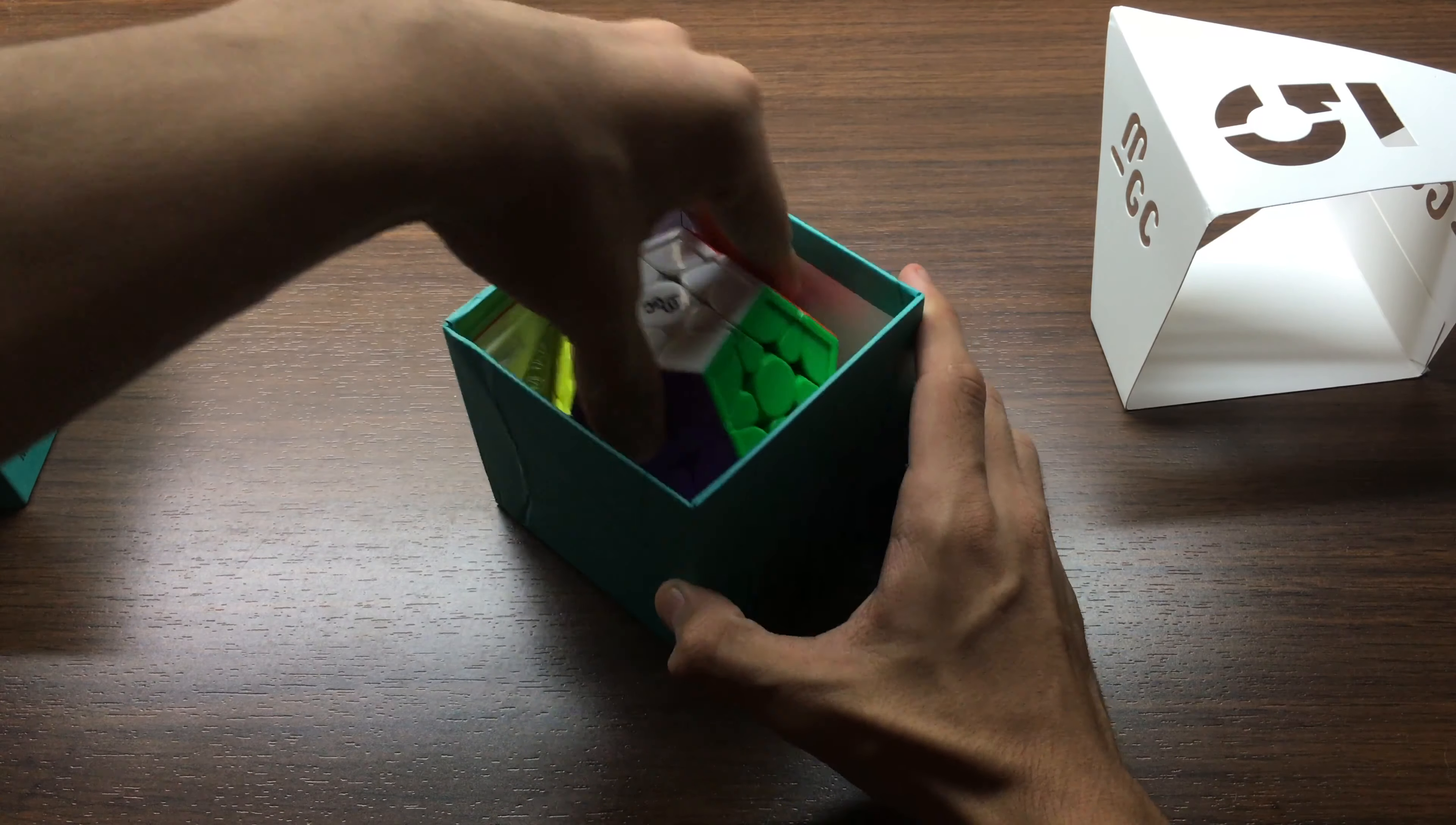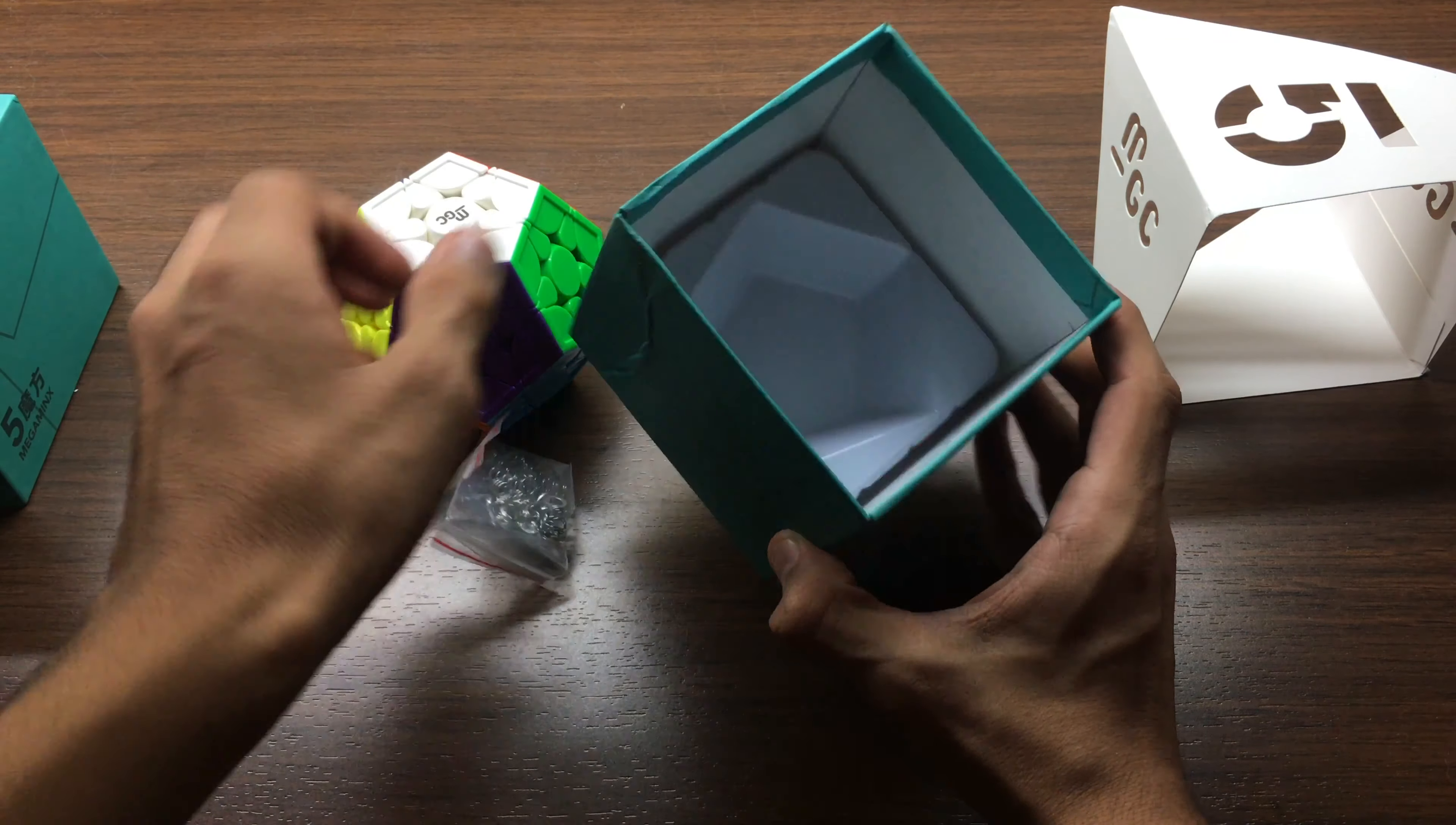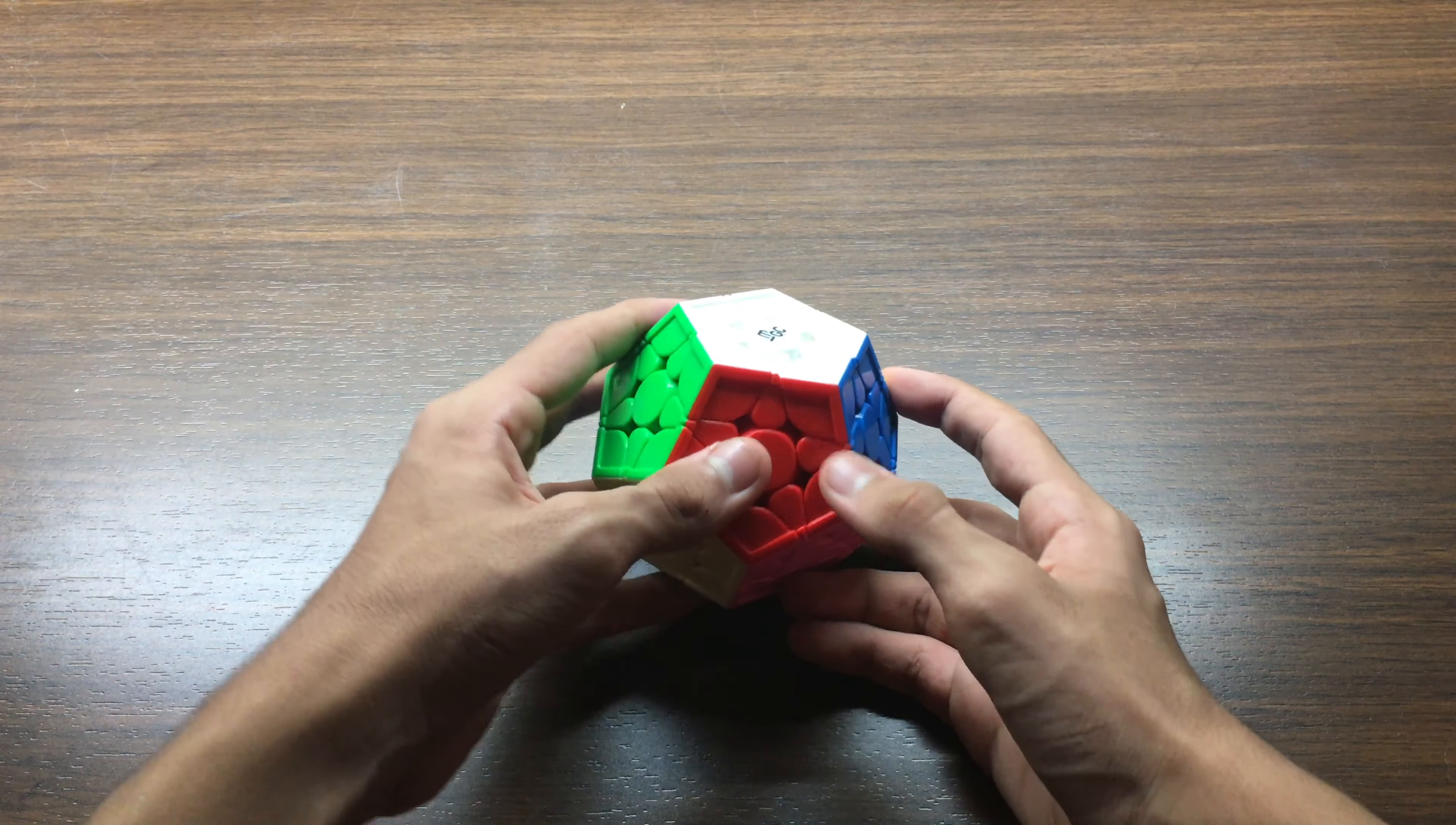Here we go, here is the puzzle itself. Inside we've got some extra springs and washers and nothing else. I'll just put all that stuff away. I haven't done first turns yet, so let's get straight into it.